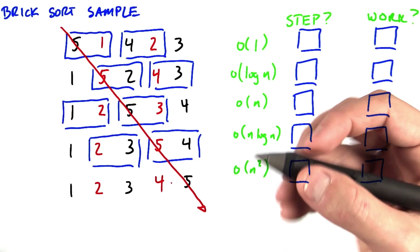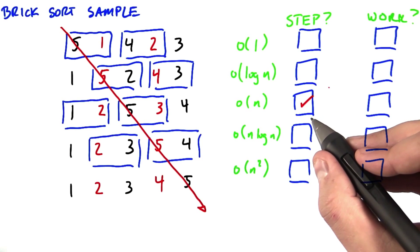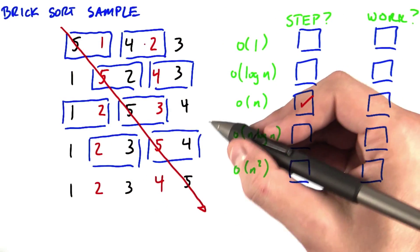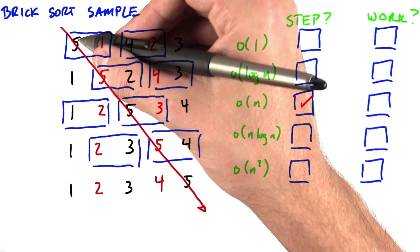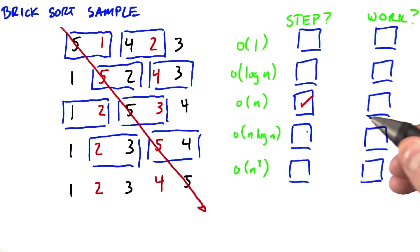So it takes on the order of n steps to get from one side to the other. And how much work does it do per step? Well, on every step, if we have n items, then we're going to do n over 2 comparisons. So in total, we do order n steps and order n work per step, totaling order of n squared overall.